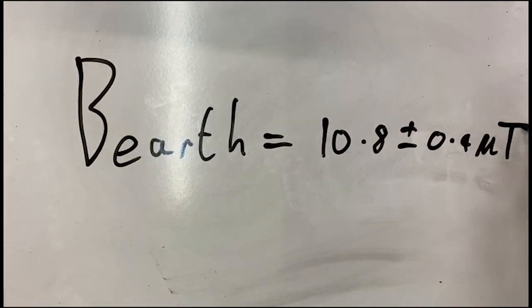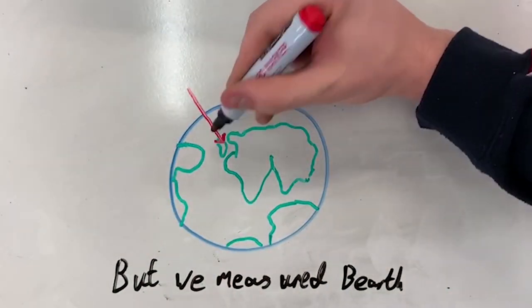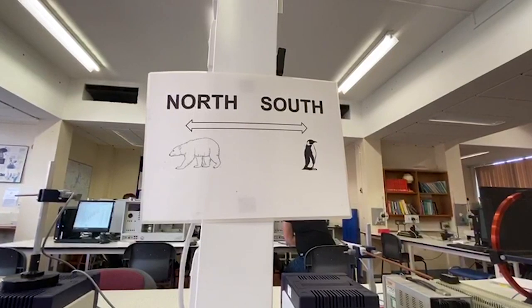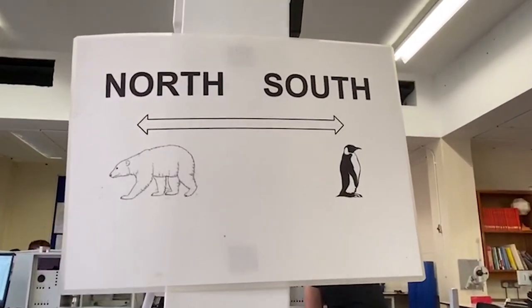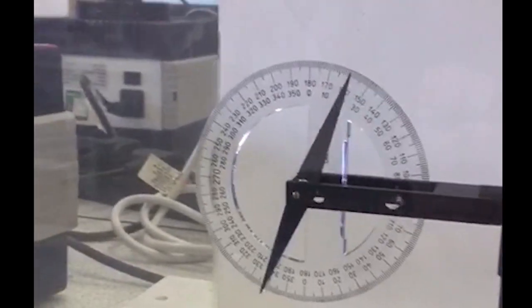But wait, we measured our magnetic field here, causing it to be at a tilt to Earth's actual magnetic field. So how do we solve that? We measured the tilt theta at 19 degrees ± 1 degree.